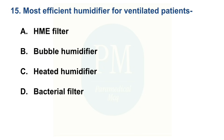Most effective humidifier for a ventilator patient: Option A: HME filter. Option B: Bubble humidifier. Option C: Heated humidifier. Option D: Bacterial filter. The correct option is Option C — Heated humidifier.